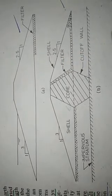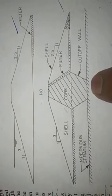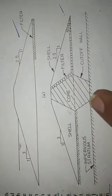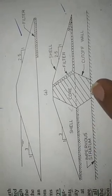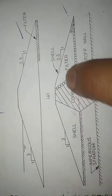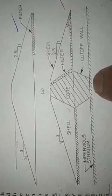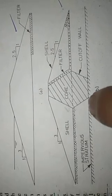Filter is provided here and a cutoff wall is also provided in the continuation of this core portion to the impervious stratum. So we can say here this cutoff wall is a type of foundation for the particular core which is drawn to the impervious stratum, which is a solid layer beneath this dam.